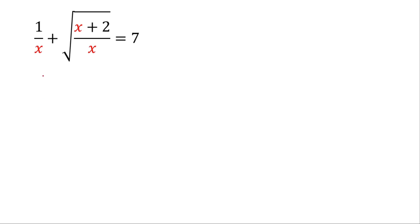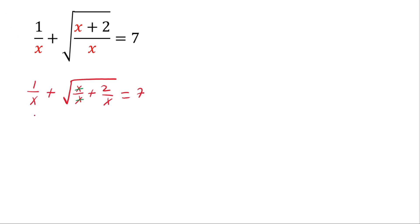Here we will apply the substitution method. 1 over x plus square root of x plus 2 over x is the same as x over x plus 2 over x, and this equals 7. Now this x and this x cancel out, then 1 over x plus square root of 1 plus 2 over x is the same as 2 times 1 over x, and this equals 7.